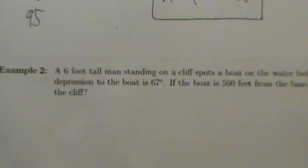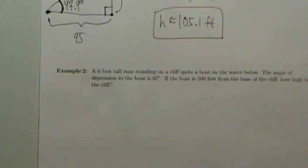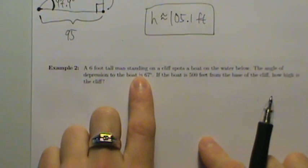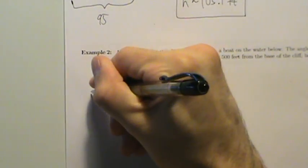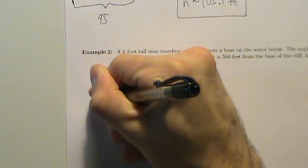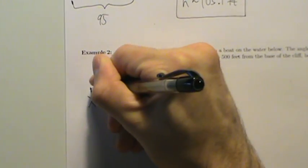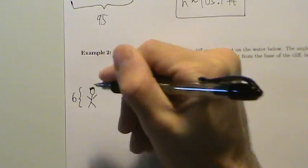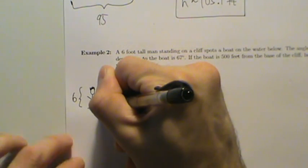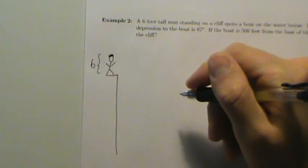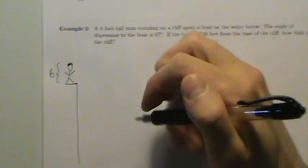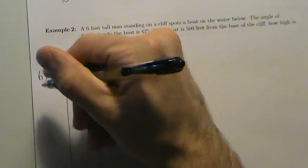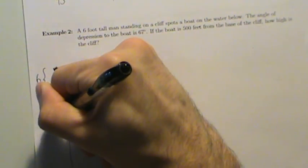First thing we want to do is draw a picture to illustrate what's happening. We have a six-foot-tall man standing on a cliff — here's our six-foot-tall man, that's six feet, and he's standing on a cliff. The height of the cliff is what we're looking for — how high is the cliff? We'll call that H.